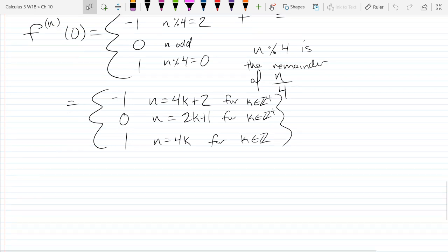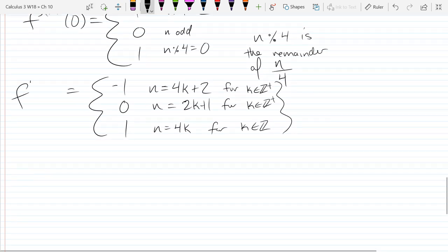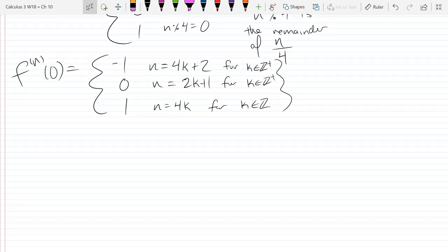So we got f_n of 0 right here. Wouldn't it be great if that term was not there, if that 0 term was not there? Then we'd just have a nice kind of alternating series, 1, negative 1, 1, negative 1.